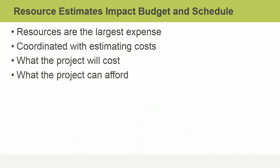Most projects work with a limited budget for an ideal set of resources. Because different resources have different price tags, you need to determine what resources your project can afford. For example, can the project afford an architect whose rate is $100 per hour, or will you have to go with the slightly less qualified architect who charges $75 per hour? Alternatively, you could schedule the more qualified architect for 60% of the required work and the less qualified architect for the remaining 40%.